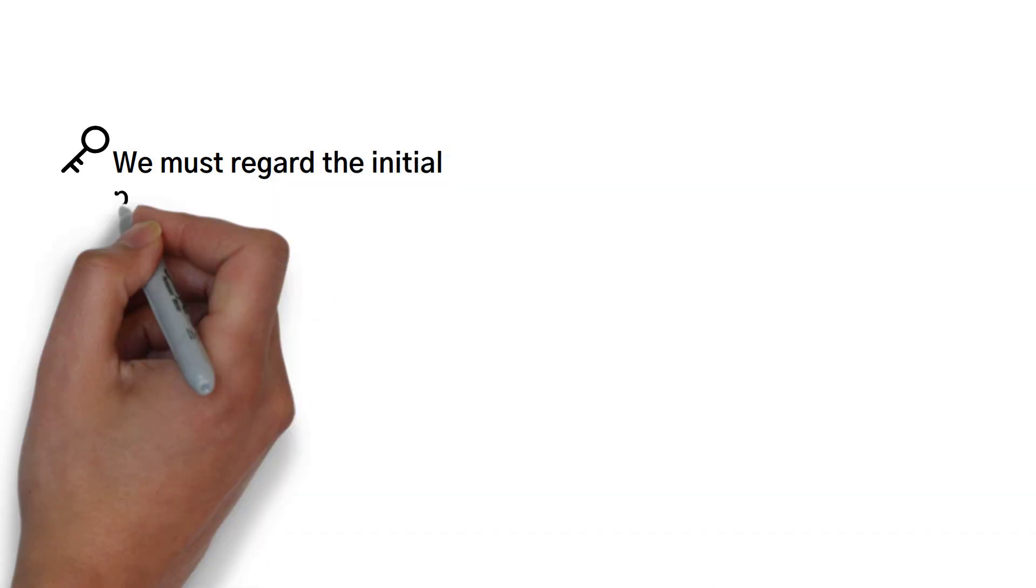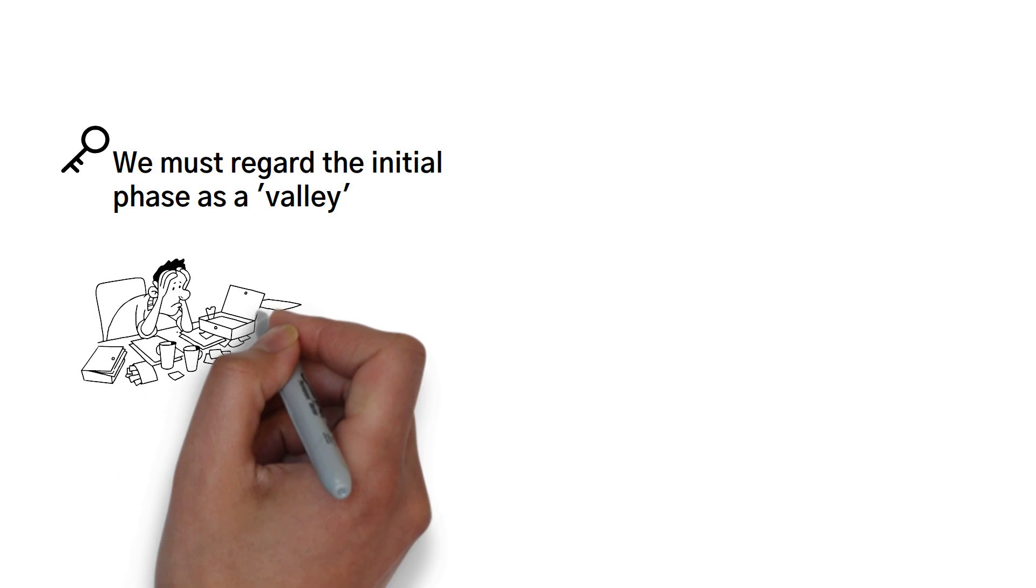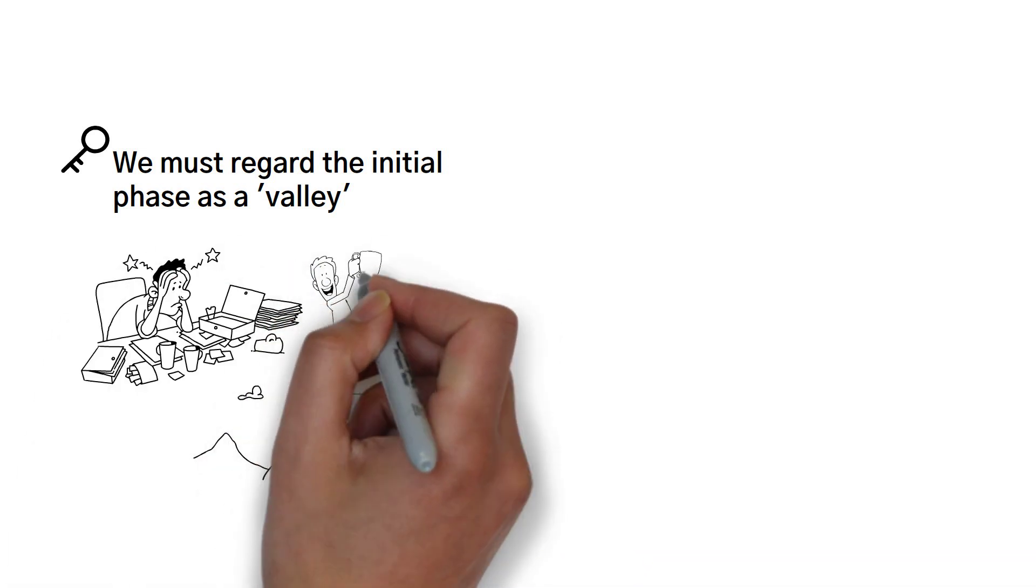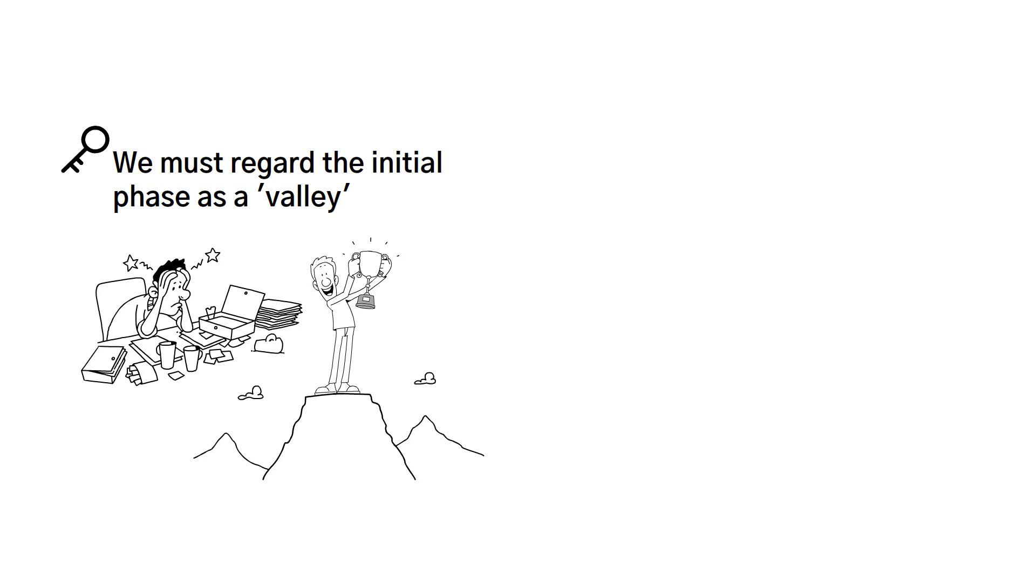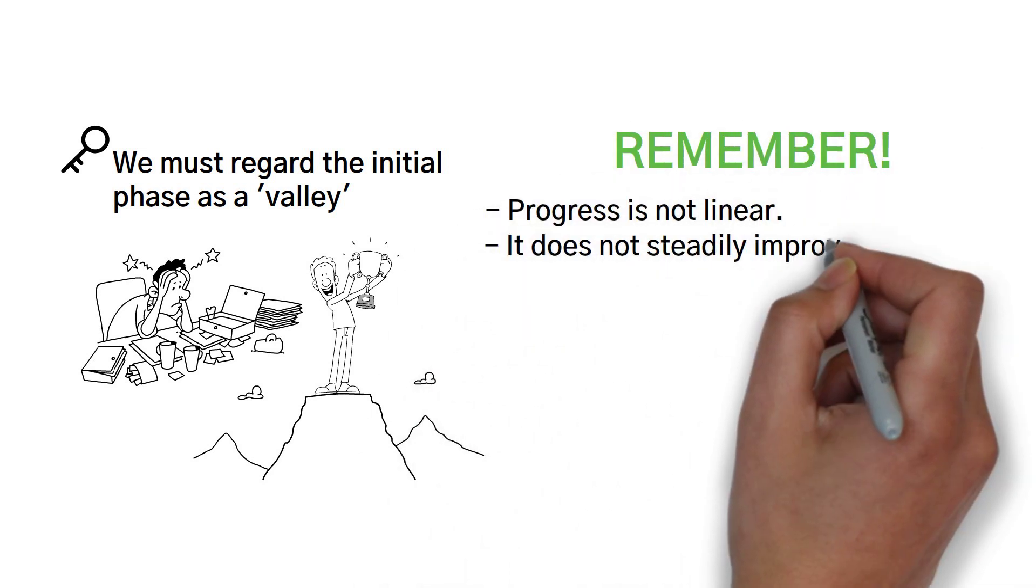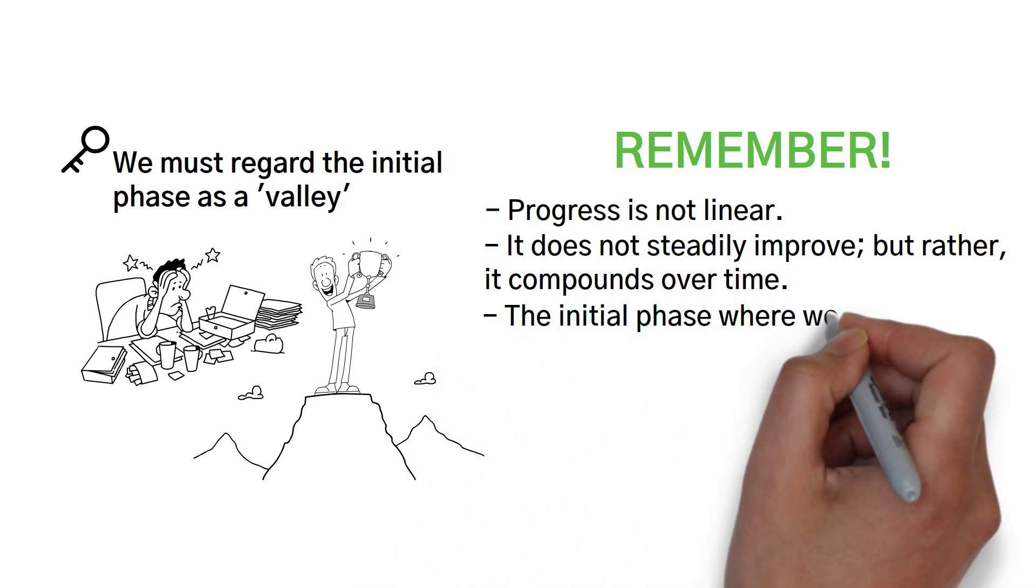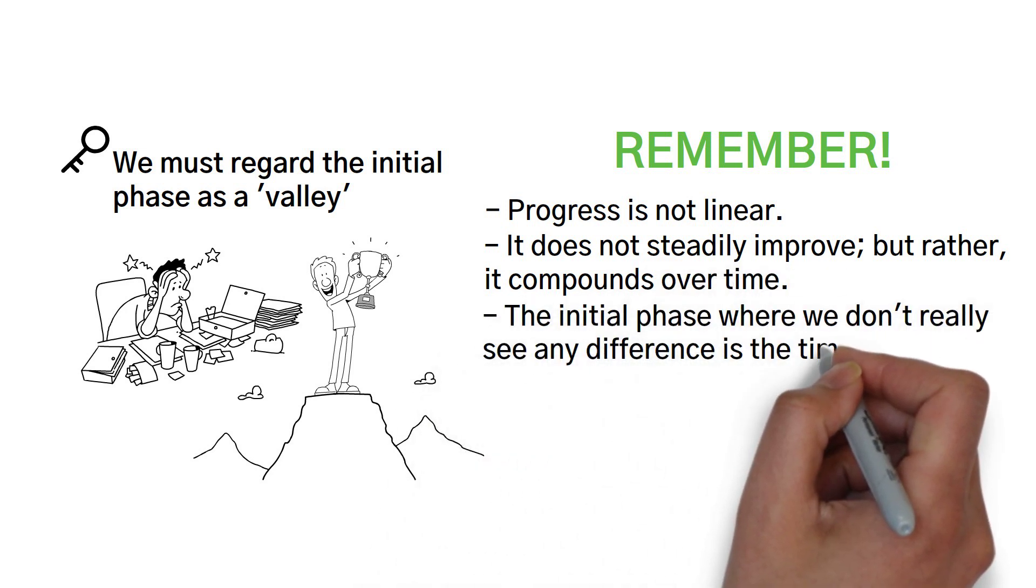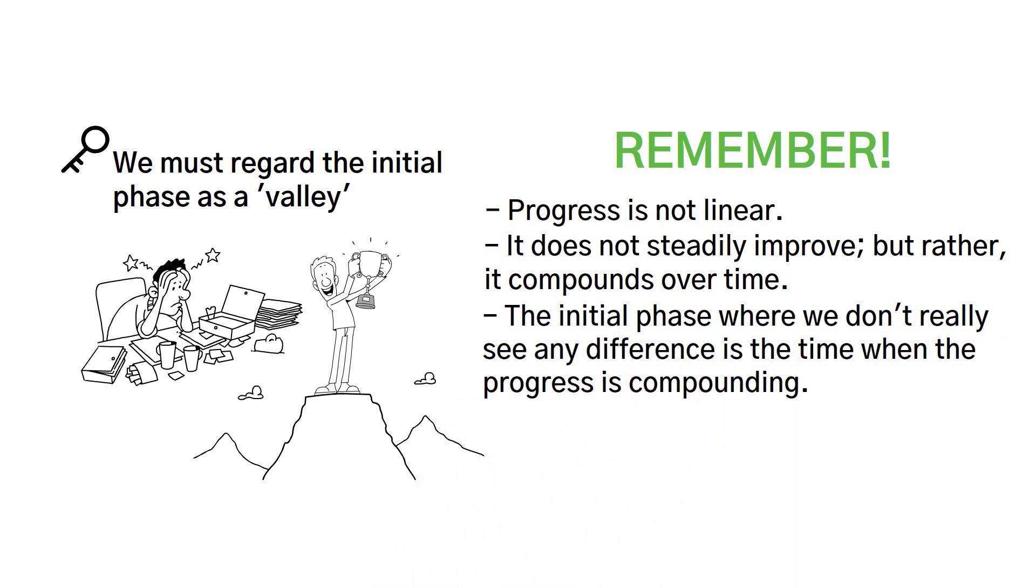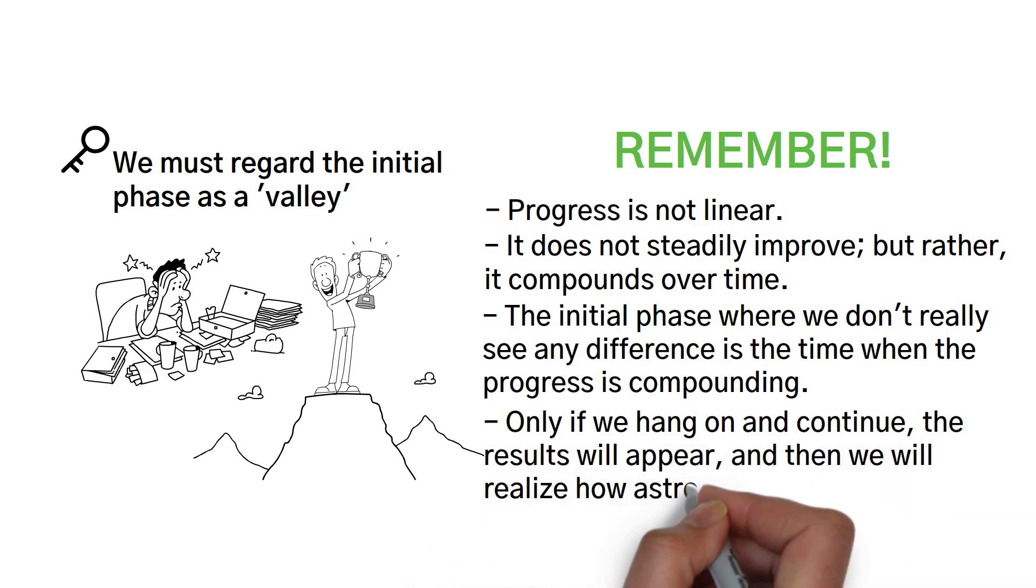The key understanding we need to have is that we must regard the initial phase as a valley, a stretch that we all have to struggle with at the beginning. But if we persist with our efforts we will surely make it over to the top. Remember, progress is not linear. It does not steadily improve but rather it compounds over time. The initial phase where we don't really see any difference is the time when the progress is compounding but not very visible. Only if we hang on to it and continue, the results will appear and then we will realize how astronomically huge they can get.